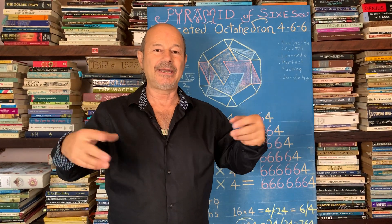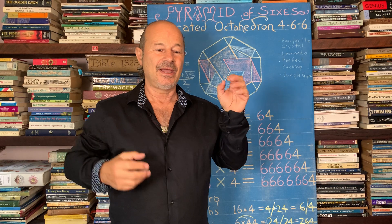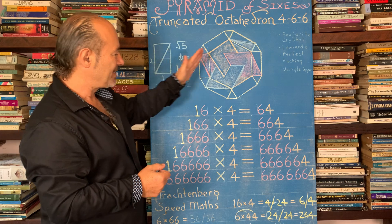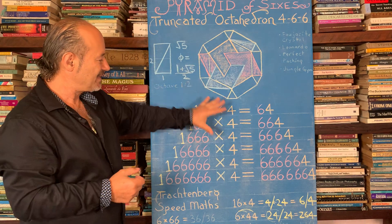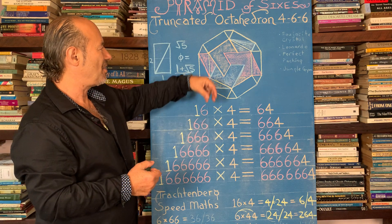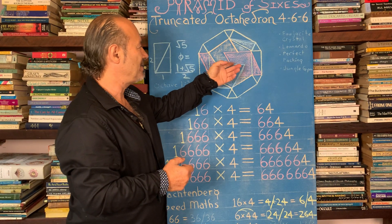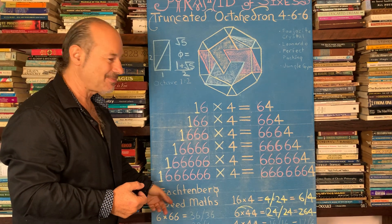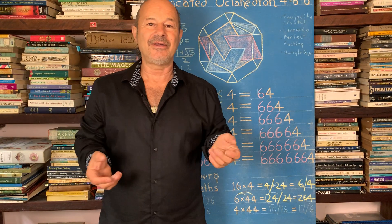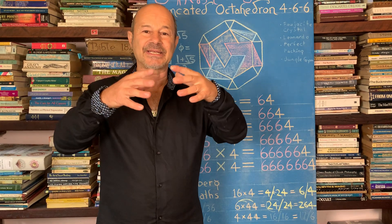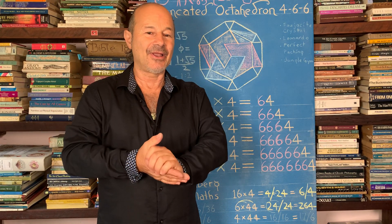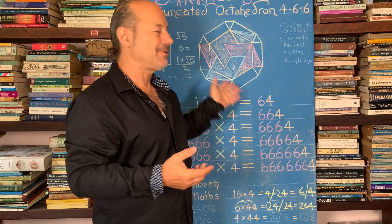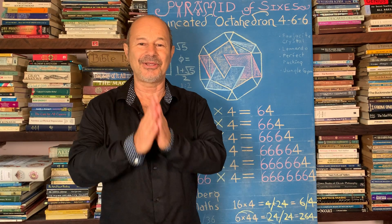By studying this fascination with the pyramid of numbers, we touched on Archimedean solids, the golden ratio, octaves, and the Trachtenberg method. That's the beauty of mathematics — it expands our consciousness. If you'd like to know more, I have a link in bio to access all the amazing sacred geometry courses we have available. Thank you everybody.